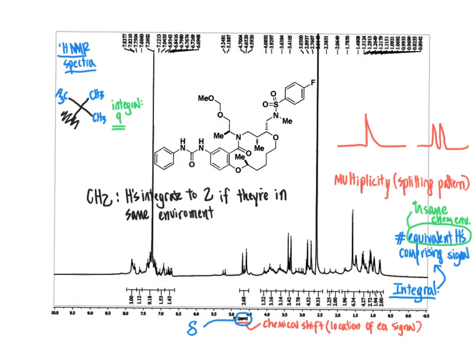In the next few videos, we are going to go through in more depth the information and the origin of chemical shift, multiplicity, and integral, and use them to ultimately take complex NMR spectra and translate the data into the chemical structure it represents.